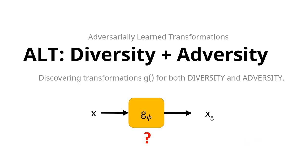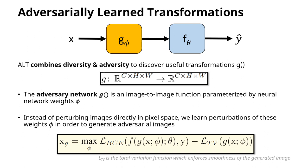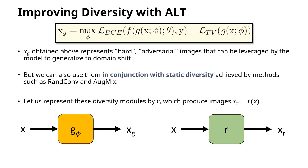In contrast to previous methods which use pre-specified static augmentations, we present ALT, which discovers transformations G that represent both diversity as well as adversity or hardness. ALT uses an adversary network that is trained to create plausible image transformations that fool the classifier. Instead of perturbing images in pixel space, ALT learns perturbations of weights phi to generate images that maximize the classifier loss. These adversarial images are used during training as examples on which the model must learn invariance. ALT can be seamlessly combined with previous static diversity modules like AugMix or RandConf, which we represent by the function R in our work.